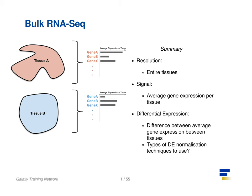With bulk RNA-Seq we compare two tissues by looking at the average expression of each gene detected across each of the tissues. Due to the number of RNA molecules being considered, the sequencing depth and the strength of the analysis is reasonably high. The differential expression is then measured as the relative expression of a given gene between one tissue and another.